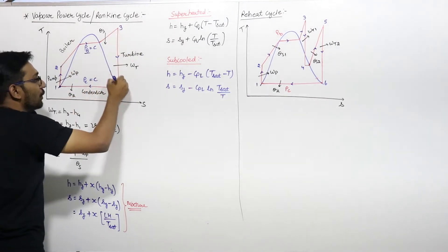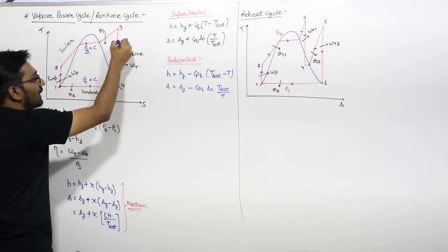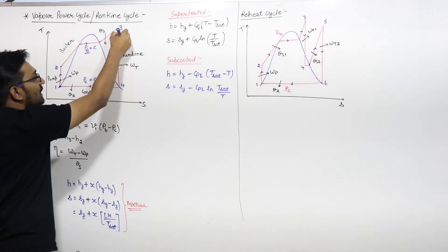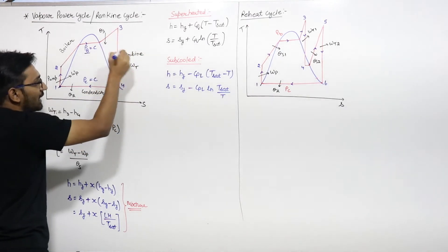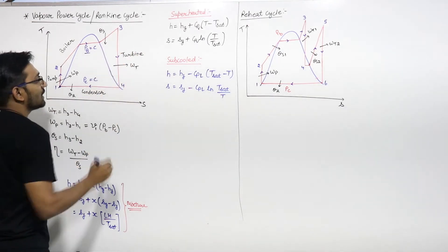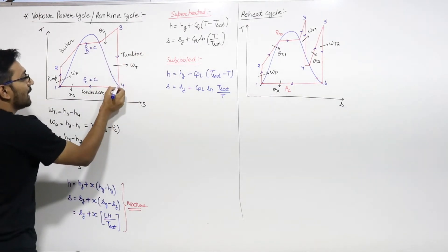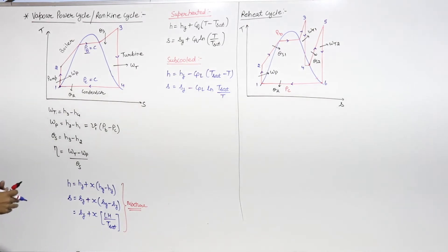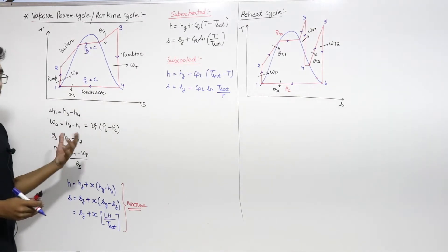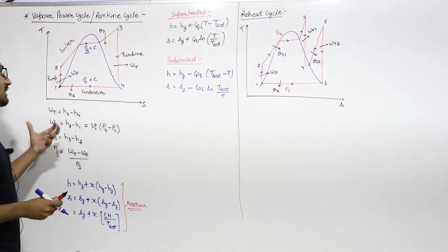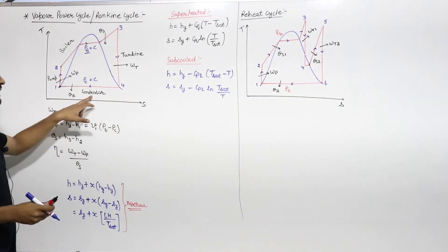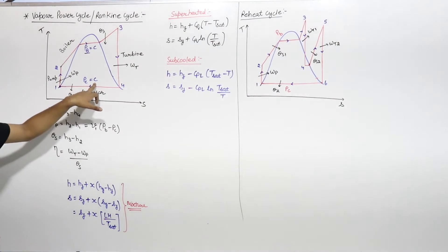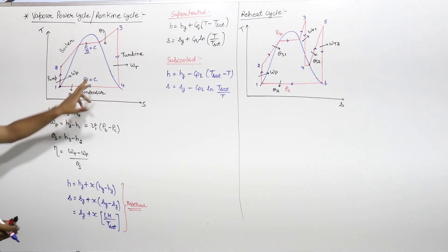From 3 to 4 it is the expansion process — adiabatic expansion in the turbine. From 4 to 1 it is heat rejection, constant pressure heat rejection in the condenser, and the pressure will be PC which is constant.